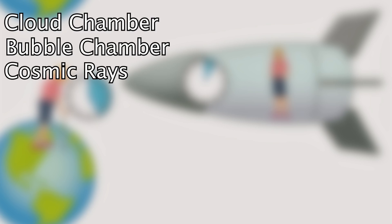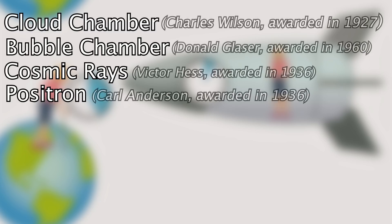Cloud chambers, bubble chambers, which came about in the 50s and are very similar to cloud chambers, the discovery of cosmic rays, and the positron, which I didn't talk about but was discovered through the use of a cloud chamber, all ended up winning these various physicists a Nobel Prize.